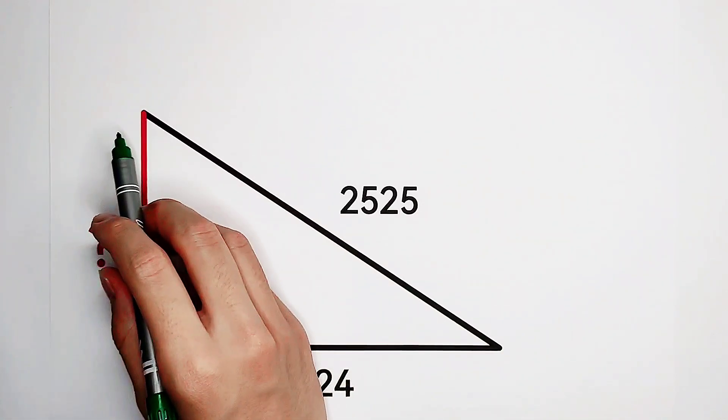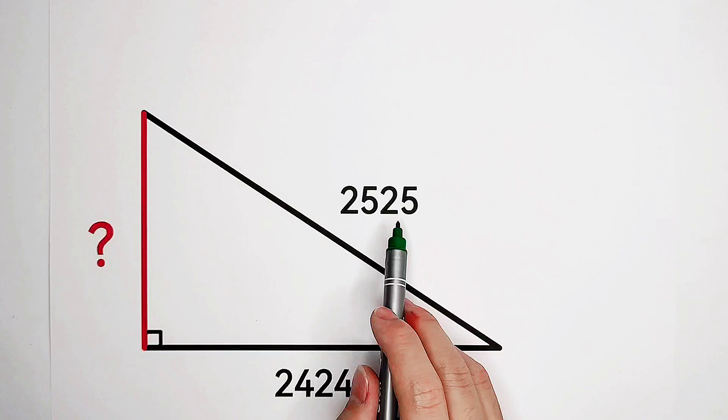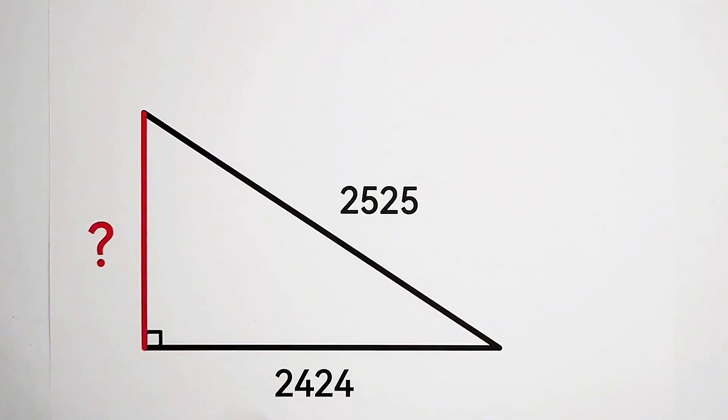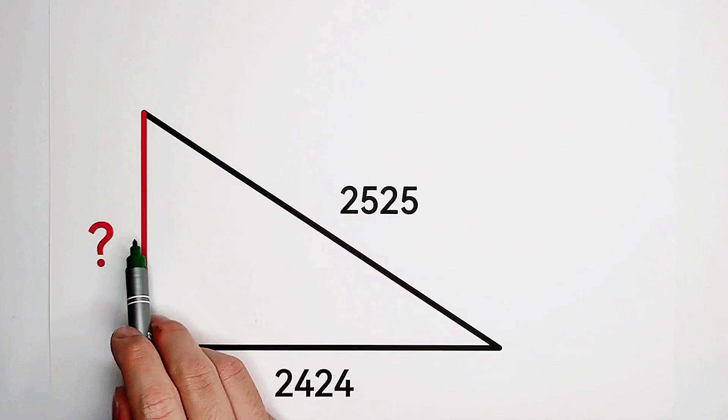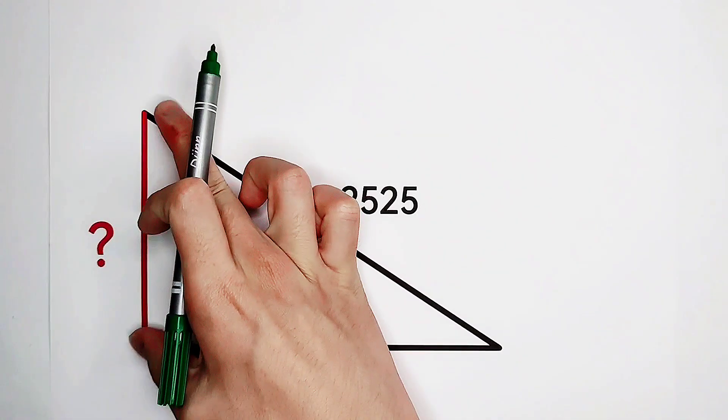Here, you see a right triangle. Its hypotenuse is 2525, one of its right angle sides is 2424. And the question is, how long does the third side measure?